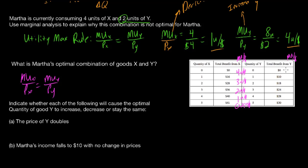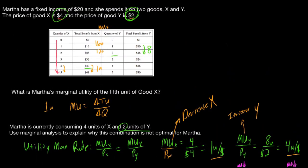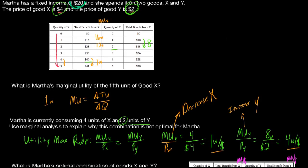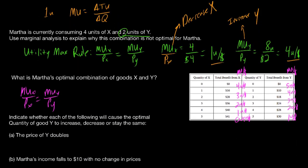Good Y costs $2 per unit. The first unit's marginal utility is 10, giving 5 utils per dollar. The second unit provides 8 additional utils, divided by $2 is 4 utils per dollar. The third unit's marginal utility is 6, giving 3 utils per dollar. The fourth unit adds 4 utils, giving 2 utils per dollar. The fifth unit provides 2 utils, divided by $2, is 1 util per dollar. Martha's budget is $20, and we need to find a combination within her budget where marginal utility per dollar is equalized.